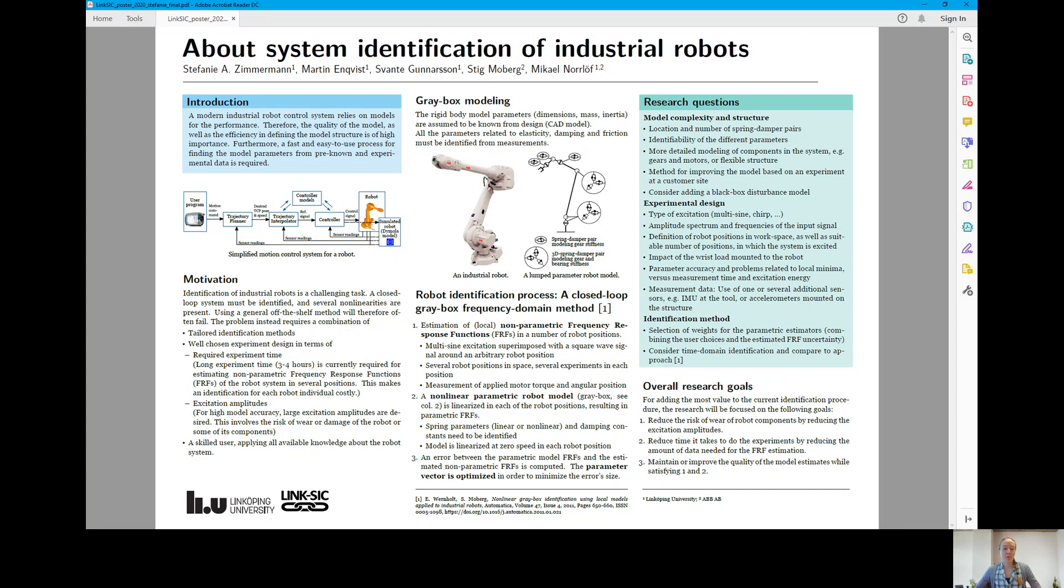I already mentioned some issues related to the experimental design when it comes to the excitation and the estimation of the non-parametric frequency response functions. And the type and the shape of the excitation signal is certainly of high interest. But also questions about the optimal robot positions for the experiments or the impact of a mounted payload I want to investigate.